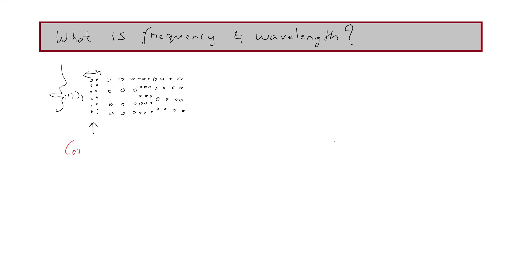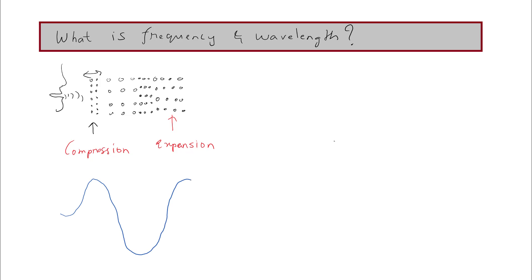These densely packed air particles — this area is known as the compression zone. The loosely packed air particles — this area is known as the expansion zone or rarefaction zone. This mode of travel can also be represented as a sine wave consisting of high peaks and low peaks, representing compressions and expansions. So this is a sine wave of high peaks and low peaks.